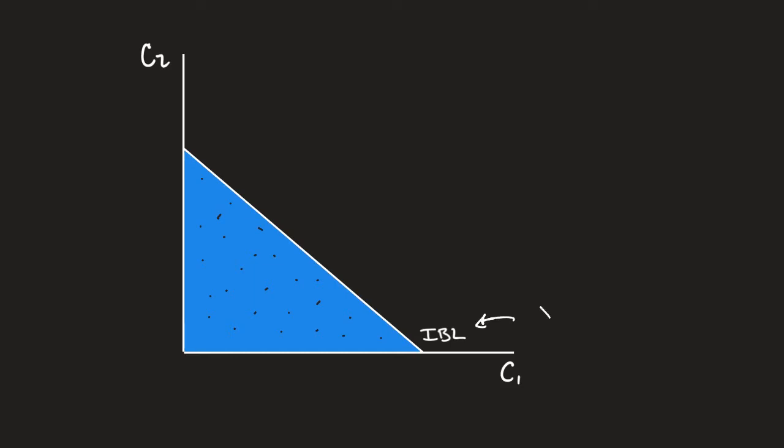So each intertemporal budget line here, each IBL has some level of Y1, W1, Y2, W2, and some interest rate.